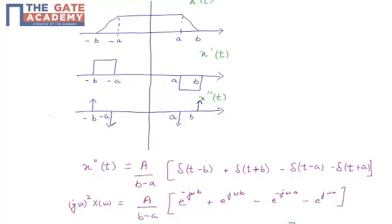And again a negative impulse at t equal to a and a positive impulse at t equal to b. So what we have is x double dash of t would be equal to A divided by b minus a times delta of t minus b plus delta of t plus b minus delta of t minus a minus delta of t plus a.